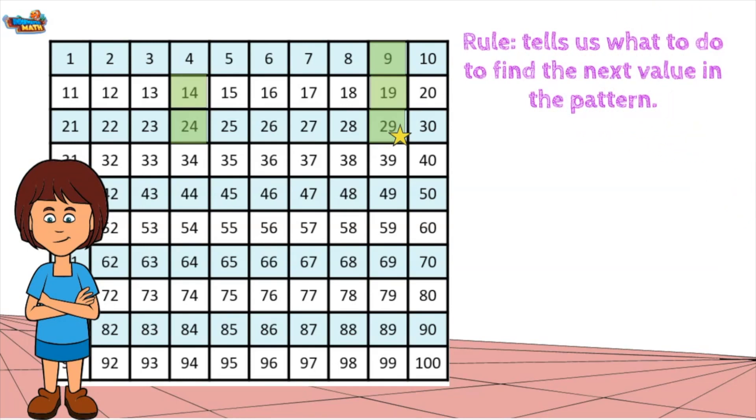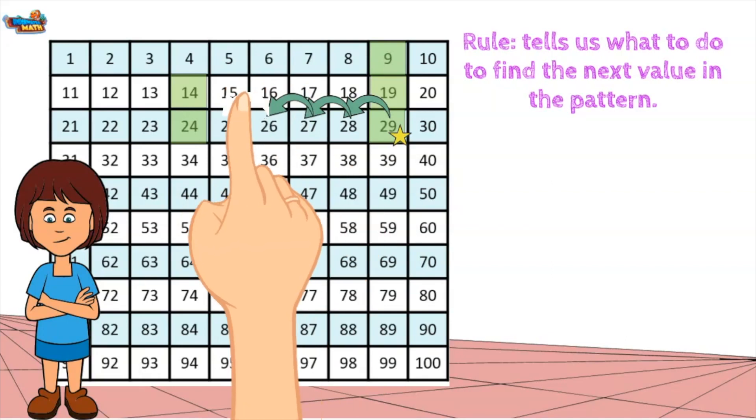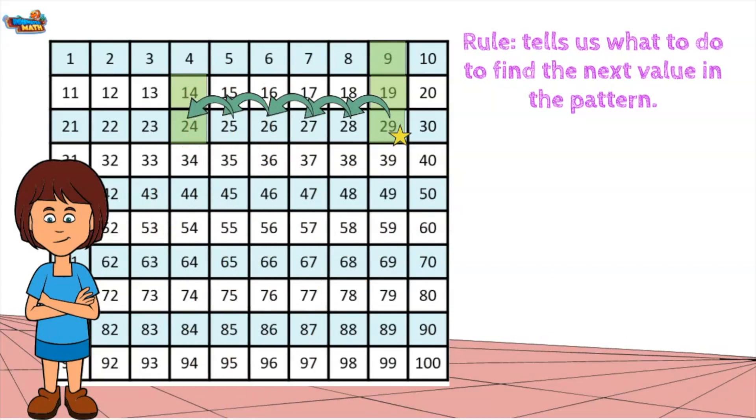The pattern starts at the number 29. To determine the rule, I find the difference between 29 and 24. I count 1, 2, 3, 4, 5. There is a difference of 5. The numbers are decreasing in this pattern, so the rule to follow is minus 5.